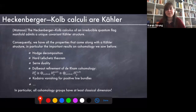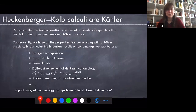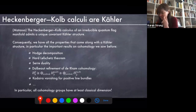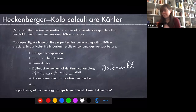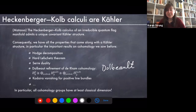Consequently, we get all of the lovely properties we saw before: Hodge decomposition, hard Lefschetz theorem, Serre duality, Dolbeault cohomology, Kodaira vanishing, and various other properties. In particular, the cohomology groups have at least classical dimension — there's no obvious dimension drop happening in this non-commutative setting — which is really nice. I suggest this is a good definition of what it means for a quantum flag manifold to be Kähler.